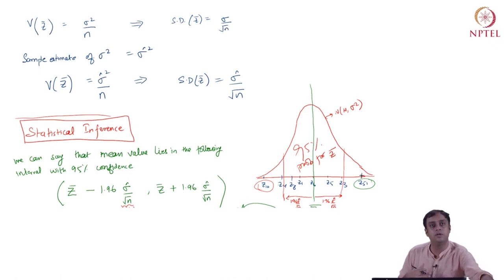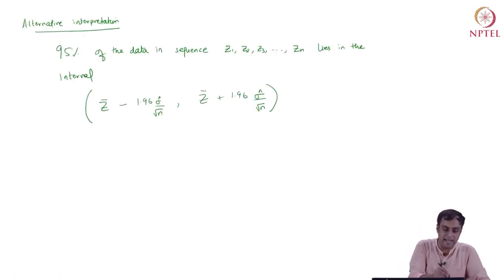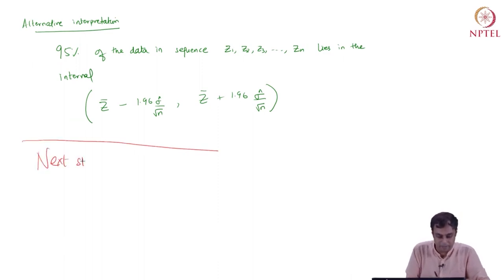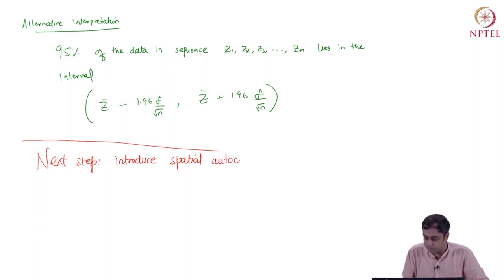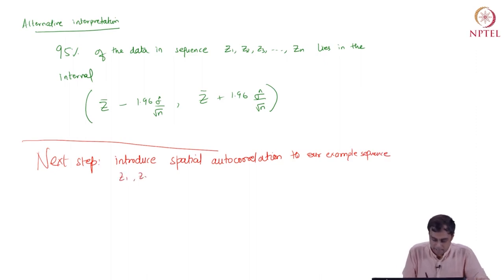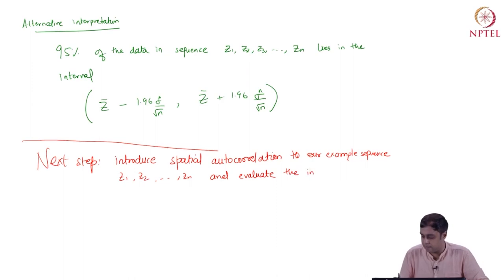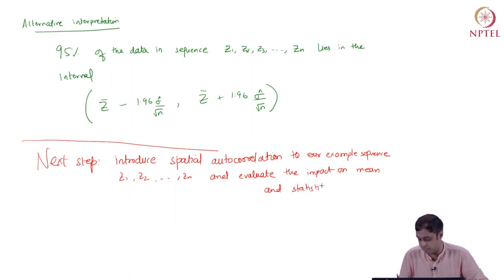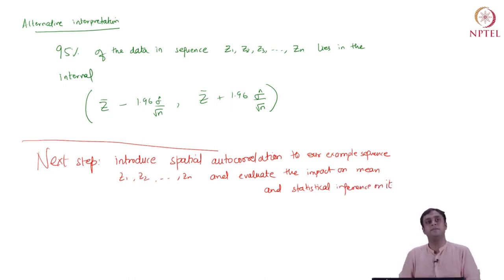Having understood this idea, the next step we will take is to introduce spatial autocorrelation into our example sequence z1, z2, till zn, and evaluate the impacts on the mean and statistical inference based on the mean. We will do that in the next module. Thank you.